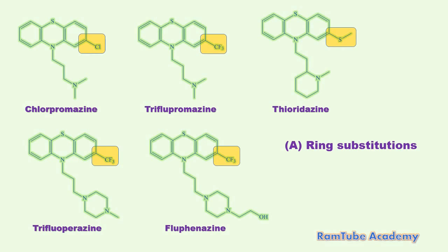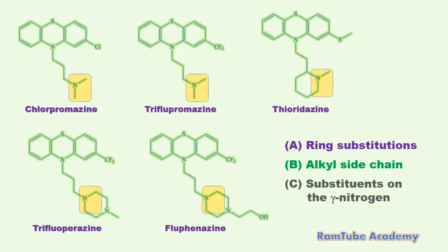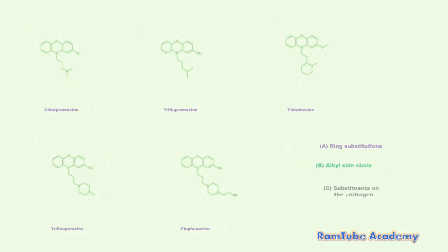The second site is the alkyl side chain — all the molecules contain a three-carbon chain without any substitutions, which increases potency, consistent with the SAR. The last site for structural modifications is the gamma nitrogen: activity changes with substitution from aliphatic to piperidine to piperazine, and the order of potency has already been discussed during the SAR.